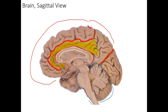Here's the parietal-occipital sulcus, so now we know where the occipital cortex is. Within the occipital cortex we have a horizontal fissure called the calcarine fissure. The calcarine fissure divides the cuneus and the lingua, which are the two halves of the occipital cortex — the cuneus above and the lingua below.